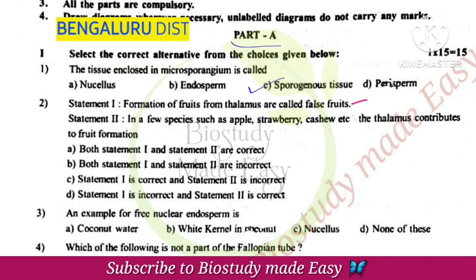Few species such as apple, strawberry, and cashew also develop from thalamus. So both statement 1 and statement 2 are correct.